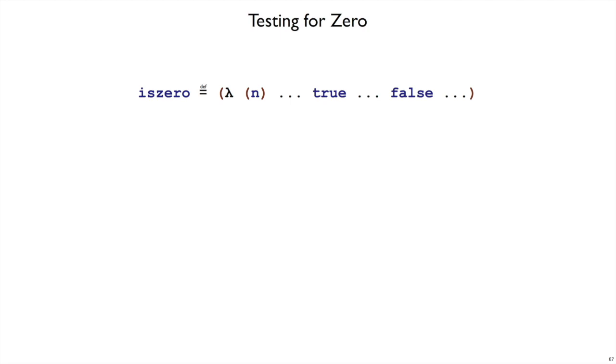But how about other kinds of operations that aren't just building up on plus, like testing for whether a number is 0. This is something we often don't have in curly that we might like to have. So is0 needs to be a function that takes a number and then it returns either true or false, depending on whether that number is 0.